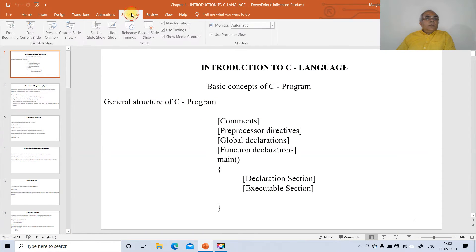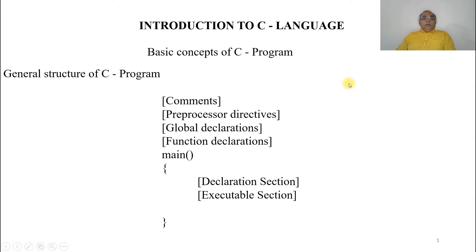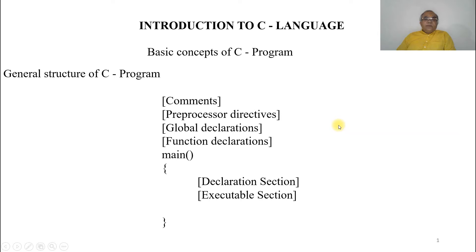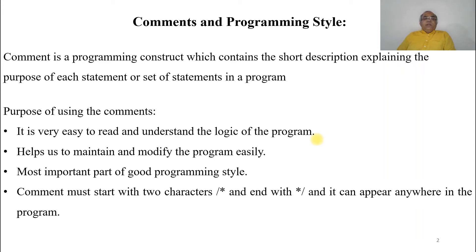In today's session, we are going to discuss the basics of C programming. The first chapter is an introduction to C language. A C program consists of some structures, which have been divided or classified into: comments, preprocessor directives, global declarations, function declarations, then we have main with the opening flower brace, a declaration section, and an executable section.